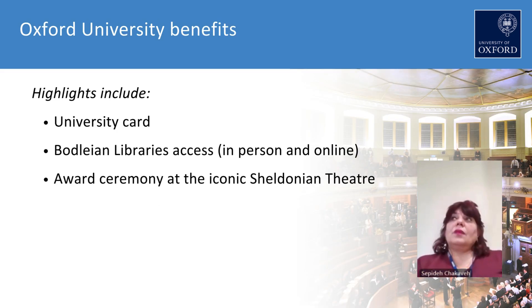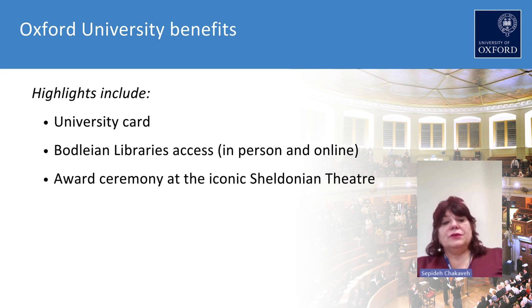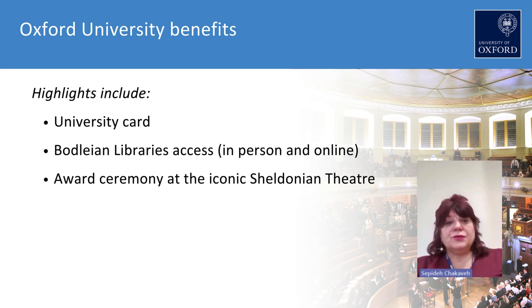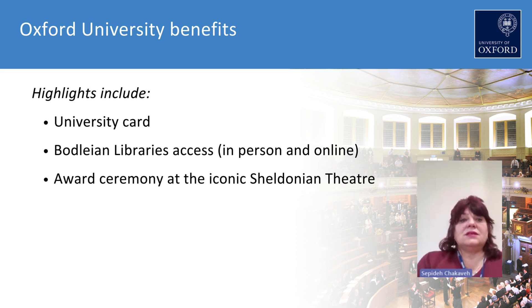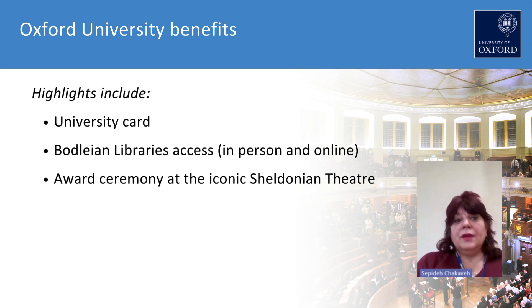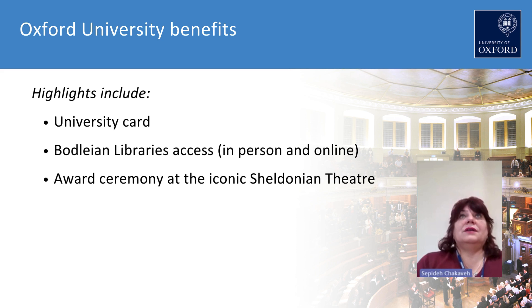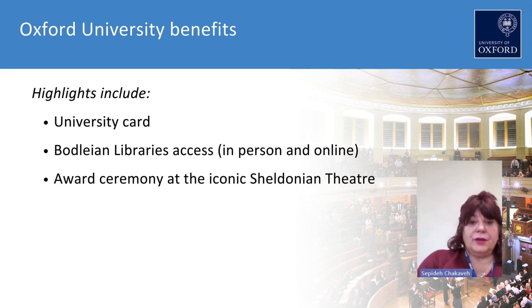Once you join the course, you'll be given a university card and be treated exactly like any other undergraduate student at the University of Oxford. This gives you access to the Bodleian Libraries, accessible in person or online. There will also be an award ceremony at the iconic Sheldonian Theatre once you graduate from the course in March of the following year.